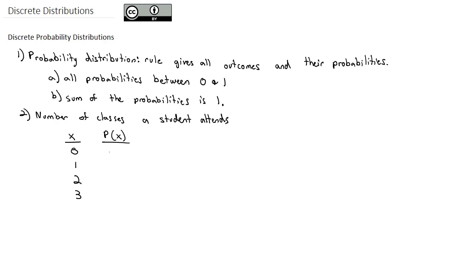The probability the student attends 0 classes is 0.01. The probability the student attends 1 class is 0.04. The probability the student attends 2 classes is 0.15. And you should be able to figure out what the third probability here is because we know the probabilities all have to sum up to 1. And so if we add up what we currently have, we've got 0.2, which means to get to 1, the last one has to be 0.80.